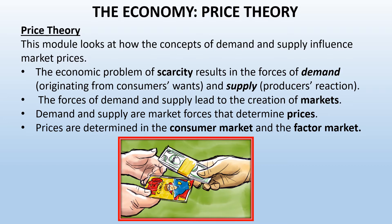As you know, this module looked at how the concepts of demand and supply influence market prices. Market prices are influenced by demand and supply. We have spoken about the economic problem of scarcity — there is an unlimited demand for goods, but only a limited supply. And that is the economic problem of scarcity. The forces of demand and supply continuously push against one another, and this leads to the creation of markets. So, demand and supply are market forces that determine prices.